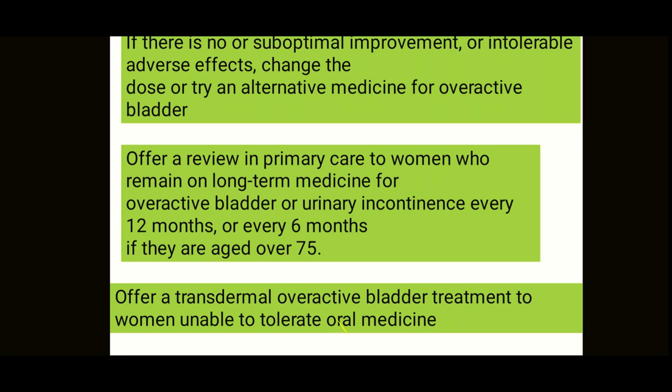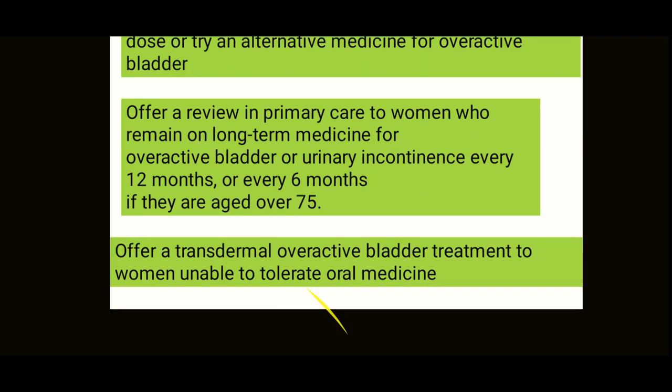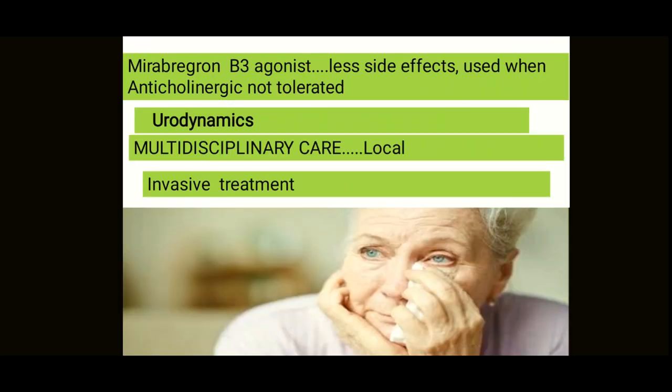Mirabegron is a beta-3 agonist with fewer side effects compared to anticholinergics. Its side effects include tachycardia, urinary tract infections, hypertension, and eyelid edema. Mirabegron should be offered to patients who cannot tolerate anticholinergics. Urodynamics, when needed, should only be done before surgery or before any intervention, and once performed, the multidisciplinary team should be involved.